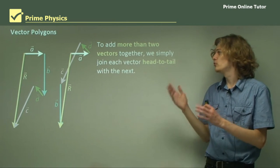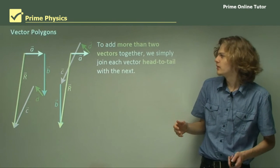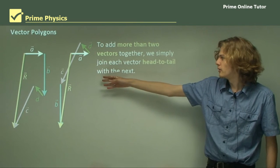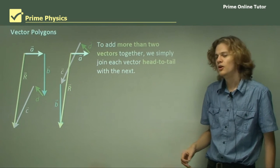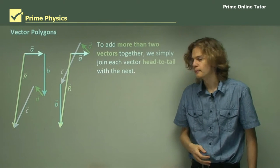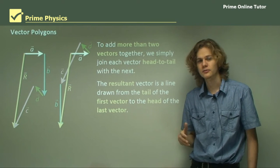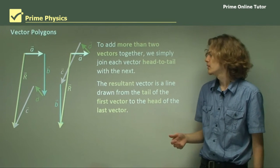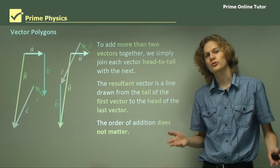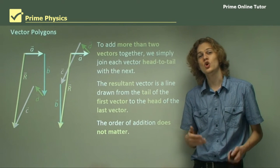To add more than two vectors together, we simply join each vector head to tail with the next vector. We can see a vector polygon here — in each case we're adding four vectors together to get the yellow resultant vector. The resultant vector is a line drawn from the tail of the first vector to the head of the last vector, just like a vector sum. The order of the addition does not matter, because vector addition is commutative.